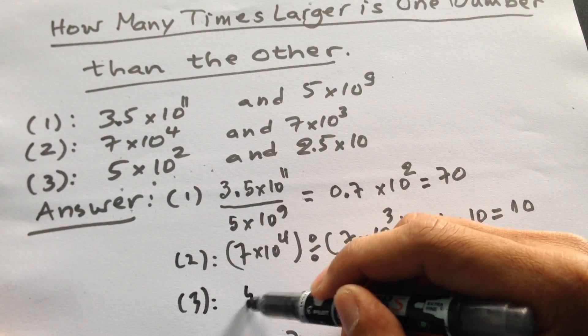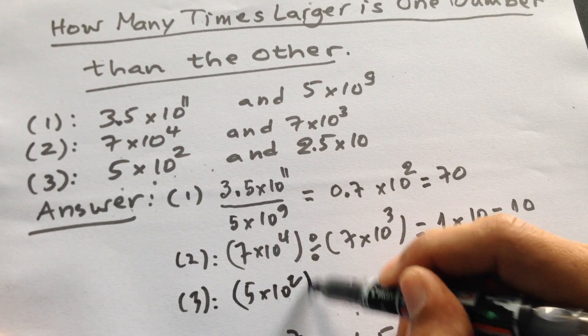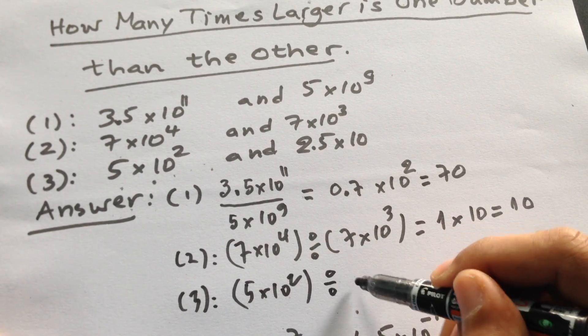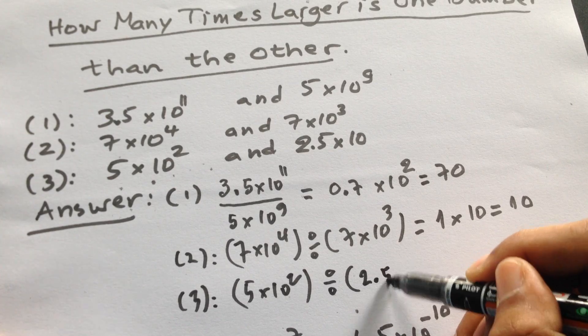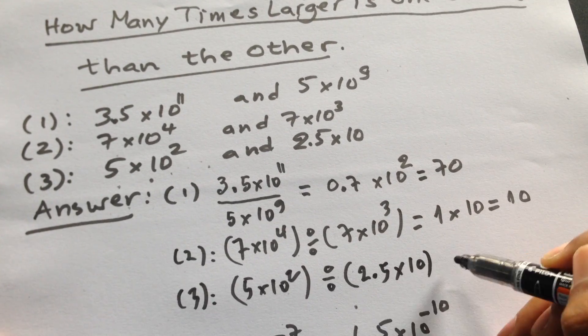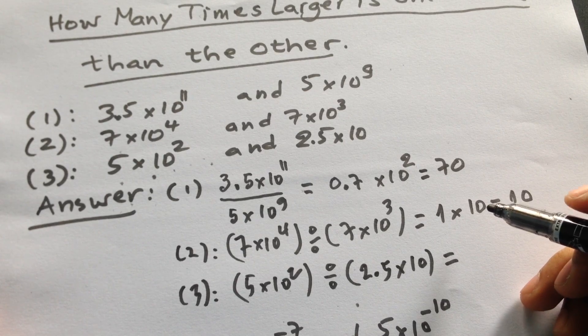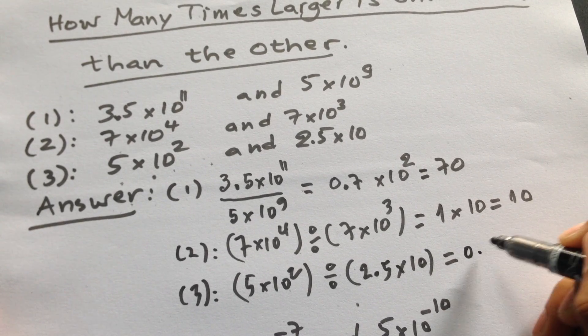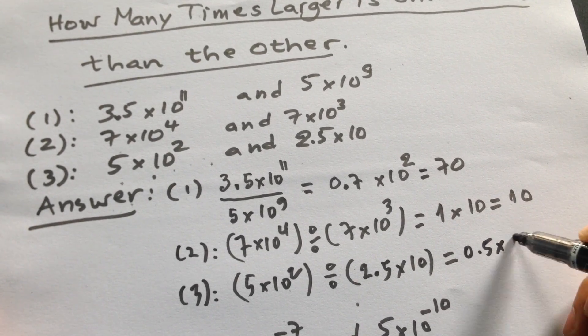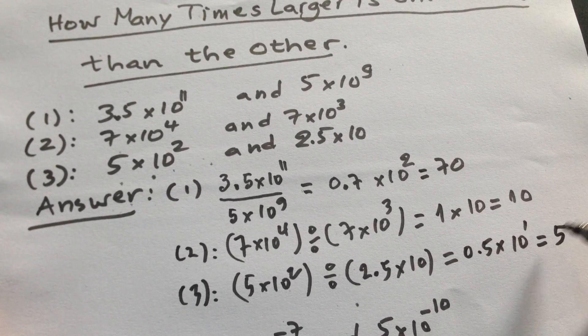And in here we can divide 5 times 10 squared by 2.5 times 10. 5 divided by 2.5, it will be 0.5 times 10 to the power 1, and then it will be 5.